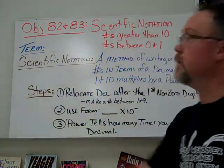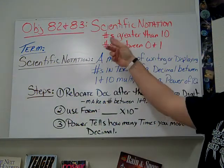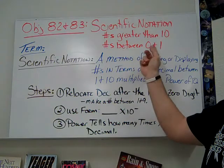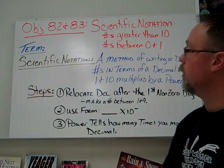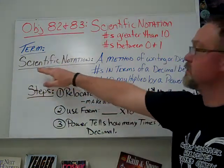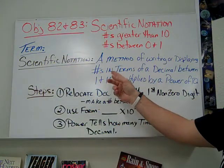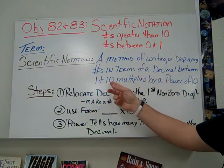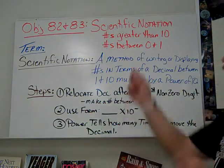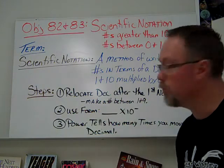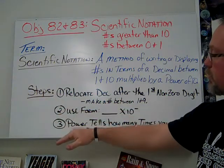Our next objectives in this set are objectives 82 to 83. This is going to be scientific notation for numbers that are greater than 10, or numbers that are between 0 and 1. So we're going to deal with decimals in this part. Our term for this section is scientific notation — it's a method of writing or displaying numbers in terms of a decimal between 1 and 10 multiplied by a power of 10. There are only three steps.